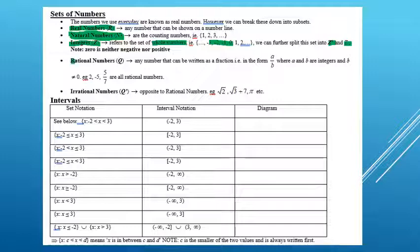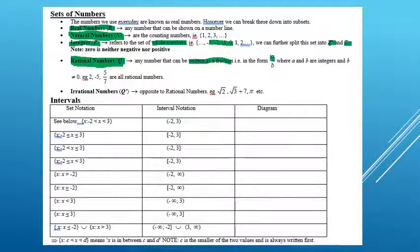The rational numbers — we generally meet rational numbers before integers in life. In primary school you learn about them; they're basically our fractions, as any number can be written as a fraction in the form A over B, where A and B are whole numbers or integers, and B can't equal zero because you'd be dividing by zero. For example, 2 is rational (written as 2 over 1), negative 5 is rational (negative 5 over 1), and five sevenths is rational.